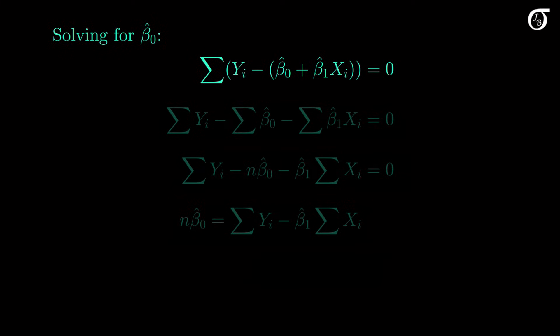If we carry the summation through, we get these terms. Note that with respect to the summation, beta0 hat and beta1 hat are constants. In a statistical sense, they will be random variables that take on a value once we get our sample. But with respect to the summation over the sample values, they are constants, so they can come outside of the summation.